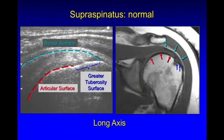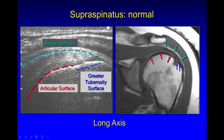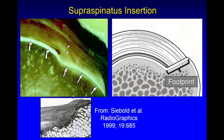We must be aware of the normal appearance of the tendon, and specifically the borders of the normal supraspinatus tendon. We have three different surfaces: the articular surface, the bursal surface, and the greater tuberosity surface, also shown here on MRI. The greater tuberosity surface designates the footprint of the tendon where it attaches onto the bone. This term is used at any tendon or ligament attachment onto bone where the surface of the bone is called its respective footprint.